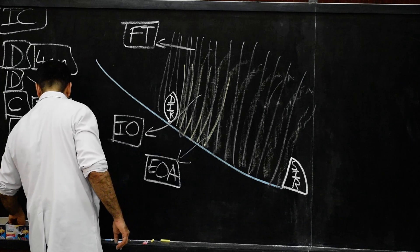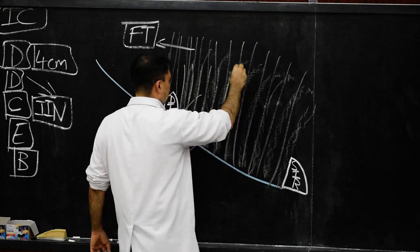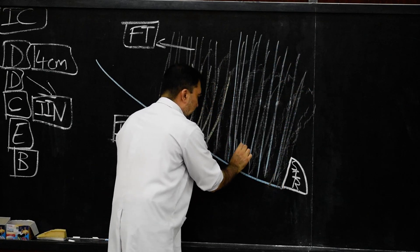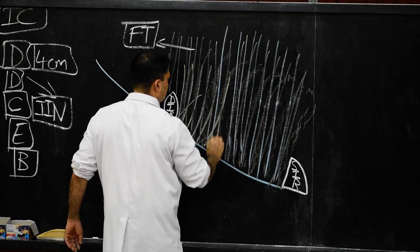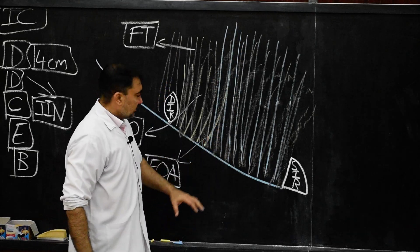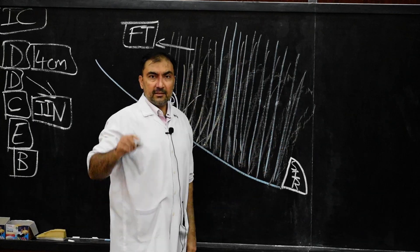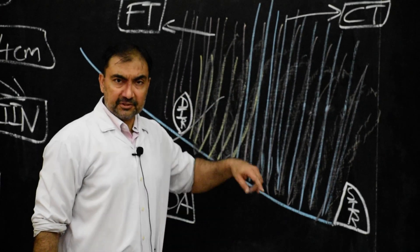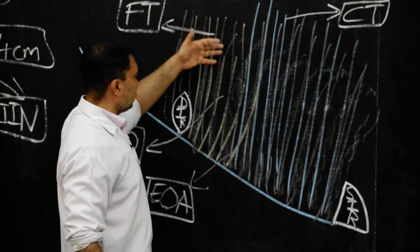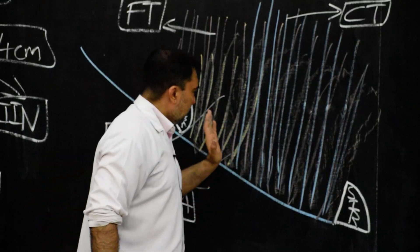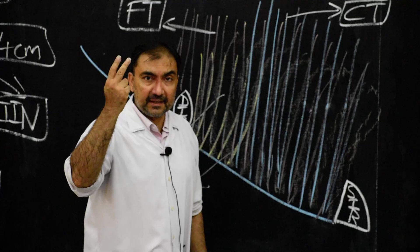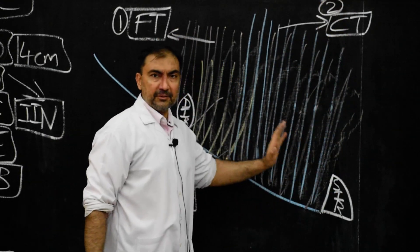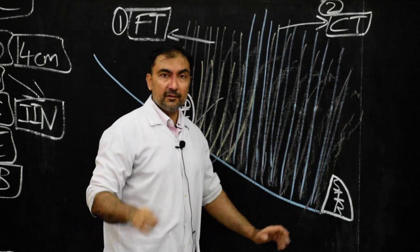We have understood conjoint tendon — also called falx inguinalis — in previous segments. It is the lowest aponeurotic fibers of internal oblique and transversus abdominis muscle. This conjoint tendon will form the posterior wall of the inguinal canal in the medial half. Let us represent it with blue color. Posterior wall structure number two: conjoint tendon in the medial half. Structure number three: the medial one-fourth of the posterior wall is the reflected part of the inguinal ligament.